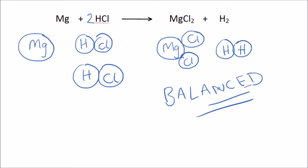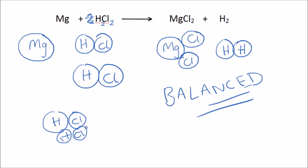Notice how we don't add any small subscript numbers to the formulas to balance an equation. If we added a small two inside HCl, it would no longer be hydrochloric acid — the molecule would be different. It would be something else entirely, so we can't do that. It turns it into something that it's not.